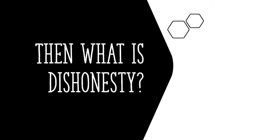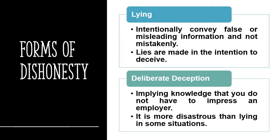From your experience, what characteristics of dishonesty can you identify? Dishonesty has many forms, so we will view them to comprehend the extent of dishonesty. The first form is lying. Lying is intentionally giving out information that you know isn't true. Such claims are made with the intention to deceive someone or a group of people.